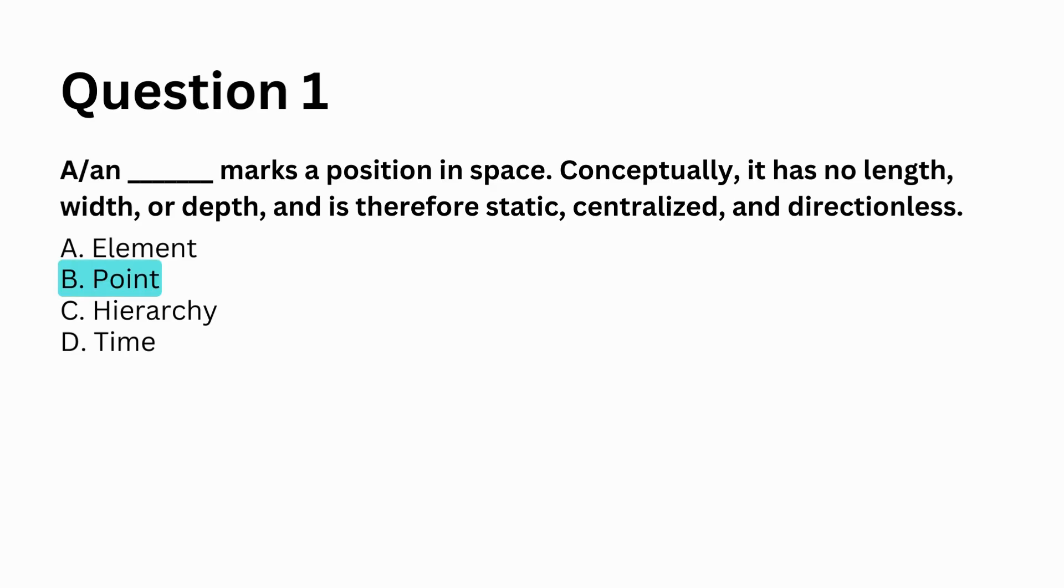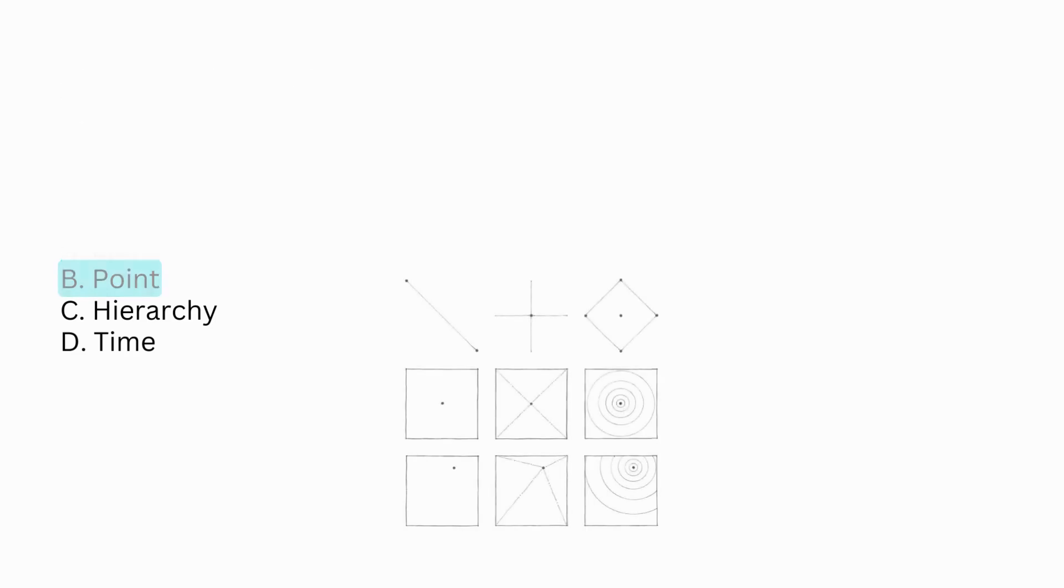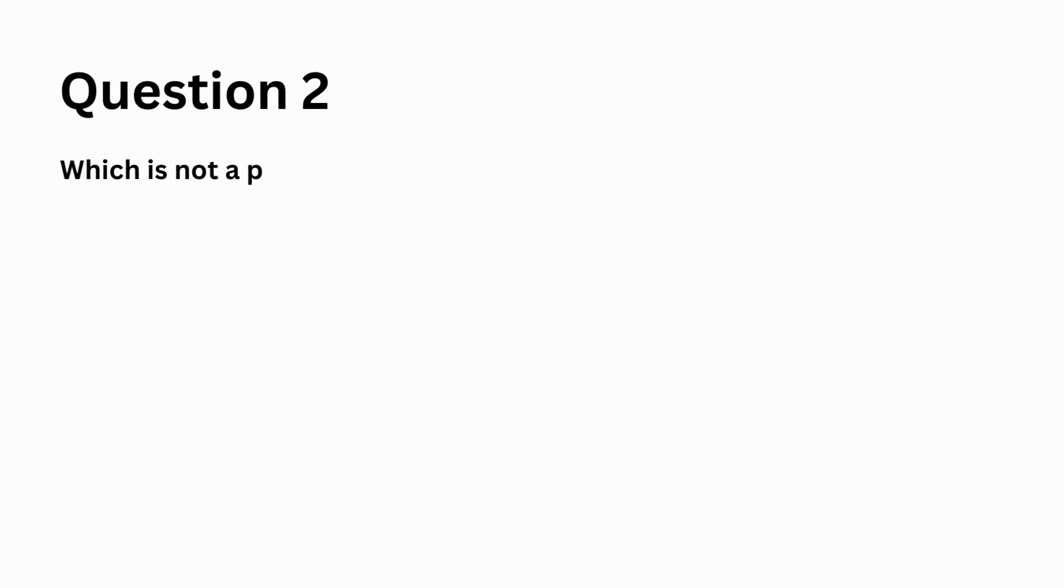B. point. A point is the prime element in the vocabulary of form. Which is not a point-generated form? A. rhombus, B. circle, C. cylinder, D. sphere.